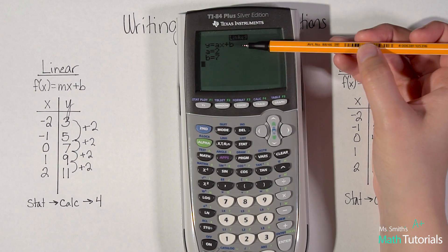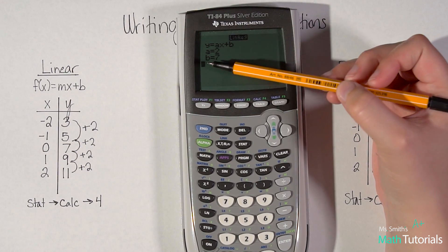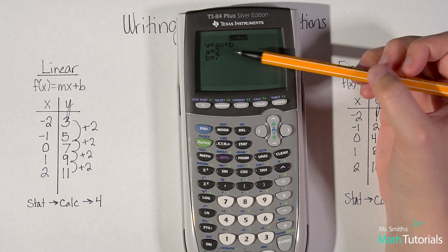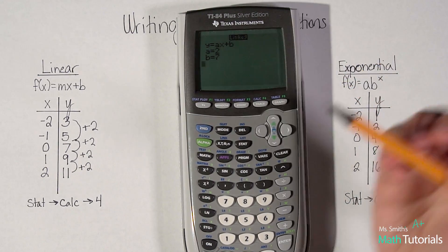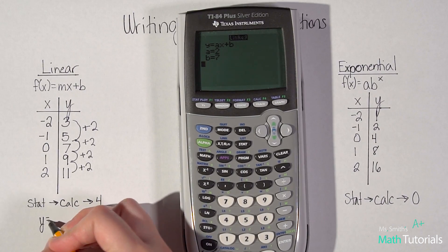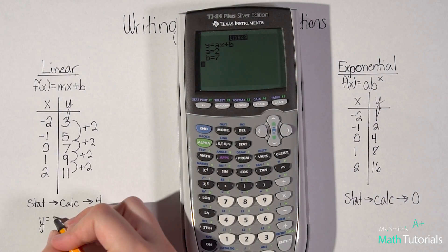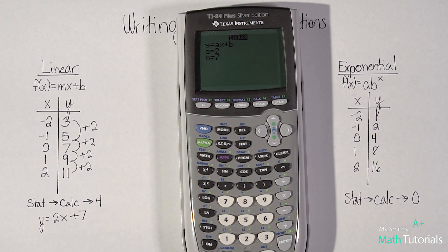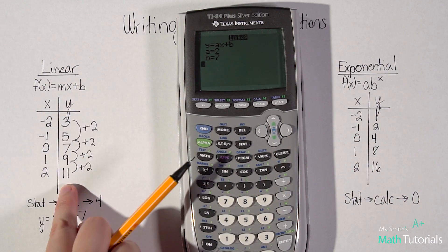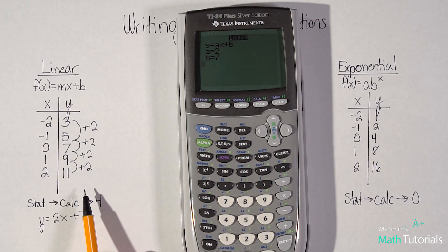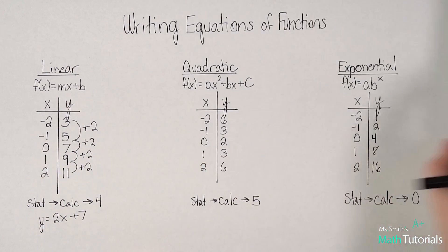And there's the equation. We talked about this in the last video, how on the calculator they note this is y equals ax plus b. In math one, we say y equals mx plus b, but they mean the same thing. So my equation for this line would be y equals, it says my a value is two, x plus b, that's seven.